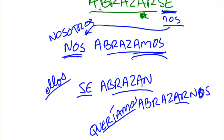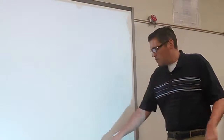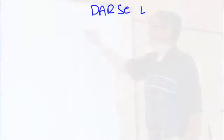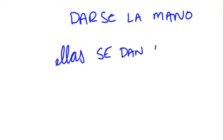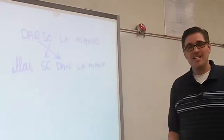Let's grab one other verb. How do you say they shake hands? The vocab word for that is darse la mano — to give each other the hand. So, those girls shake hands: ellas se dan la mano. See — the pronoun goes in front of the conjugated verb. Ellos se besan — they kiss each other. Ellos se abrazan — they hug each other. Ellos se saludan — they greet each other.